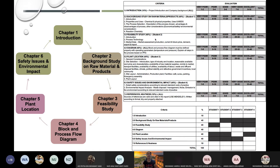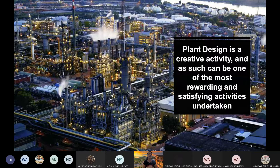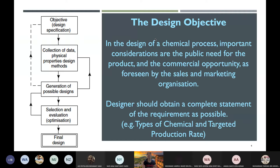Plant design is a creative activity and one of the most rewarding undertaken. When you do a design project, assume you are actually building a real chemical plant from scratch. When designing, you always have a design objective. Important considerations include the public need for the product and the commercial opportunity as seen by the sales and marketing organization — meaning there must be demand from customers — which is why before building a plant we need a feasibility study.